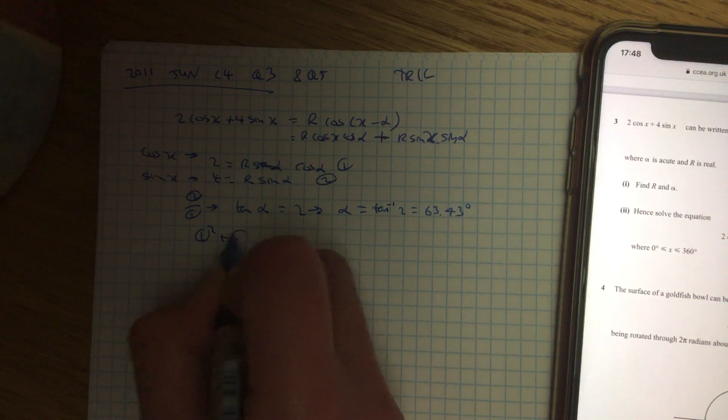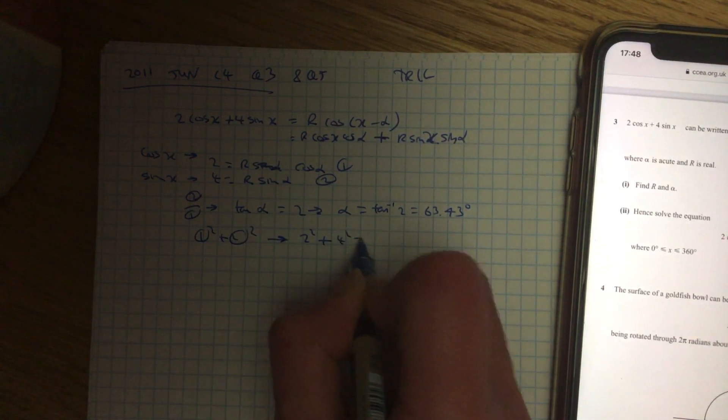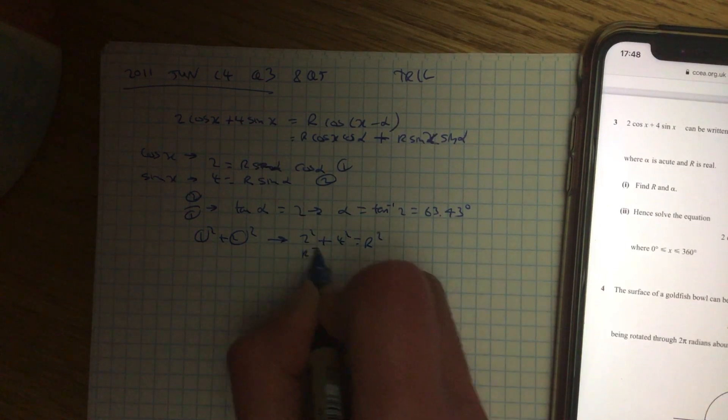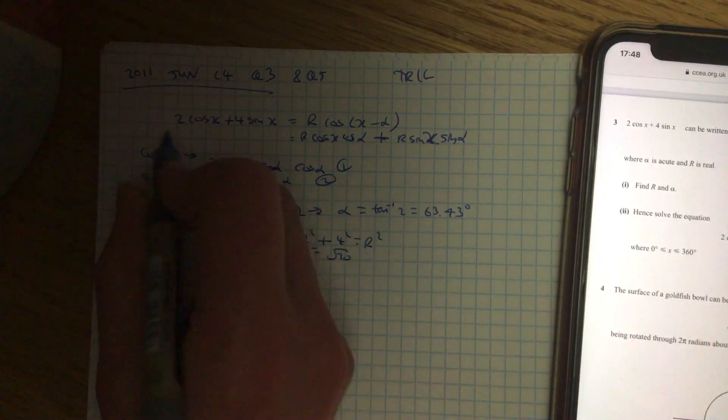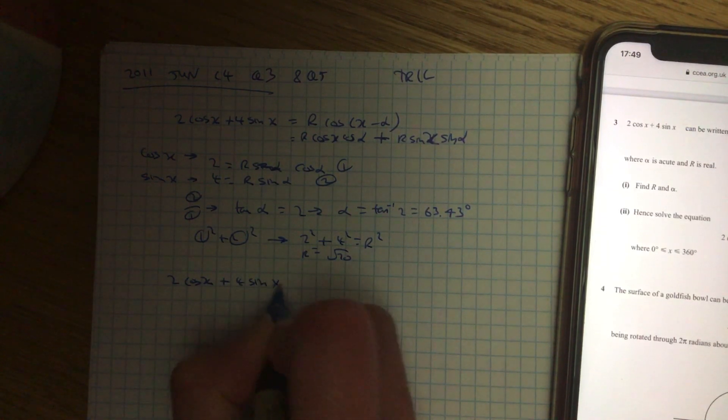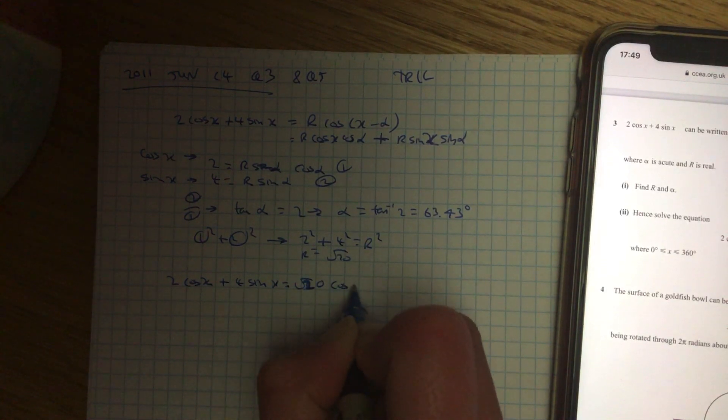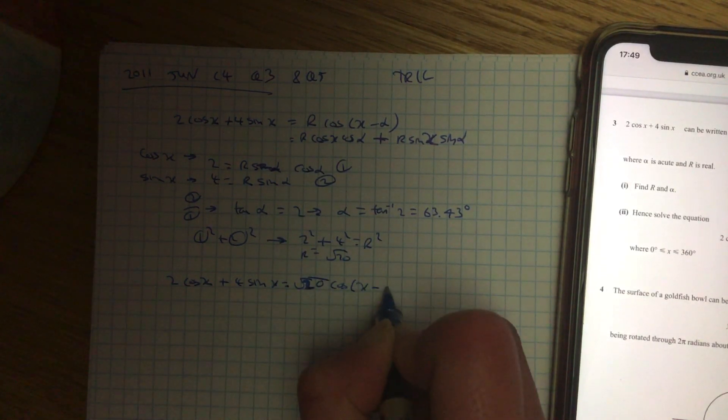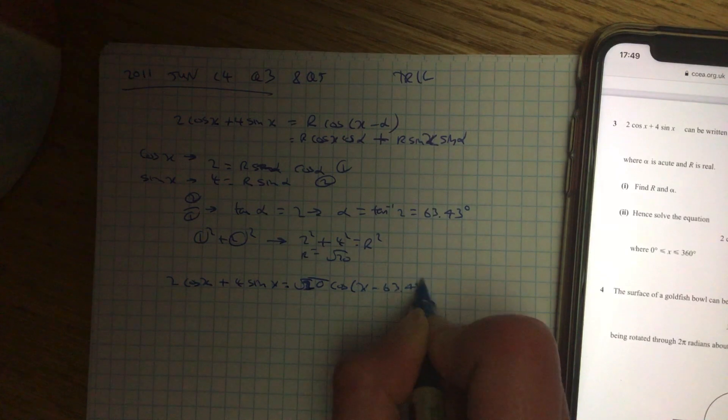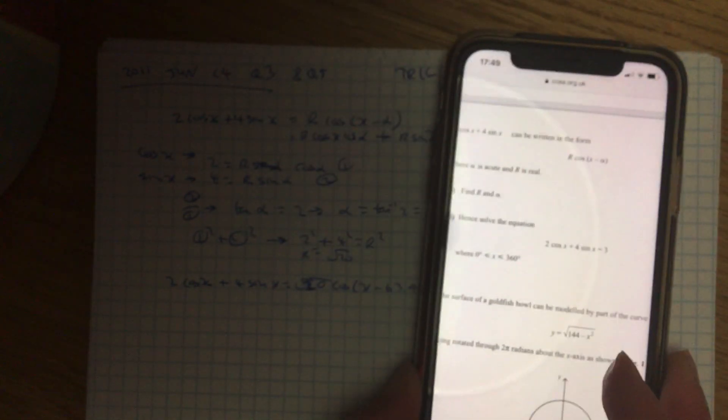And then 1 squared plus 2 squared gives you your R, so 2 squared plus 4 squared gives you your R squared, so R is the square root of 20. Okay, so your expression 2 cos x plus 4 sine x equals R cos x minus alpha. Now, part two says, hence, solve this equation, so it equals 3, and we're in degrees, not to 360.